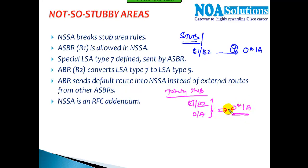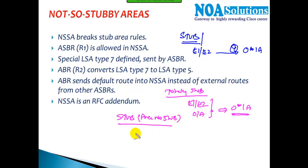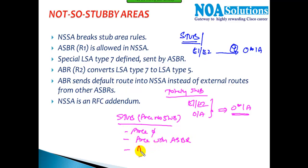We also covered which areas cannot be configured as stub areas. Area zero cannot be a stub. An area with an ASBR cannot be a stub. And an area with a virtual link cannot be a stub. So whichever area you configure as stub must not fall under any of these three categories.